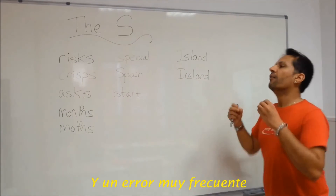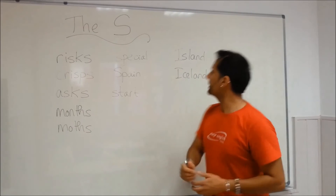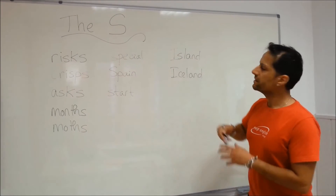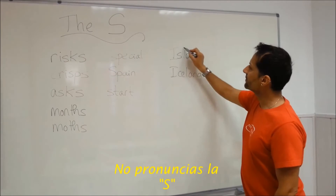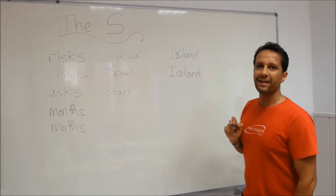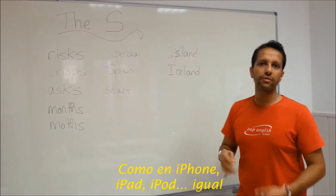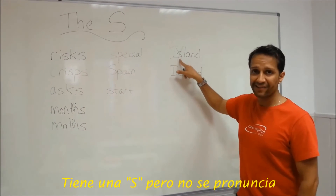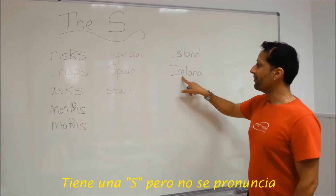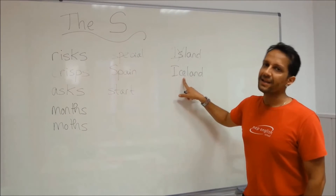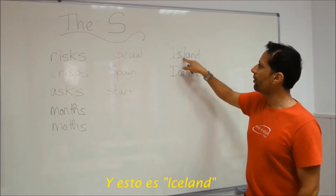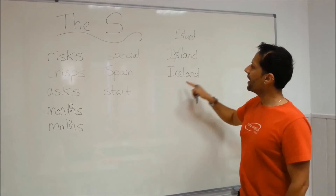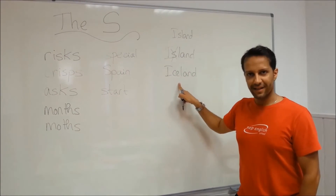And a very common mistake: 'isla' — 'island.' You don't pronounce the S. Island. Just like iPhone, iPad, iPod — same thing. Island has the S, but you don't pronounce it. And this is 'Iceland' — Islandia. So: island — don't pronounce the S. And Iceland — Islandia.